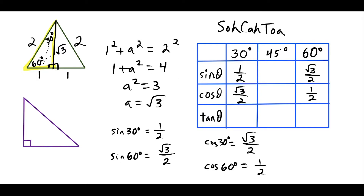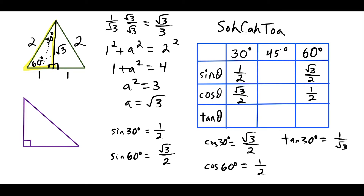For tangent, we use the ratio opposite over adjacent. Tangent of 30 is the side opposite 30, which is one, over the side adjacent, which is root 3. Rationalizing by multiplying by root 3 over root 3 gives square root 3 over 3 — this is the more common form. For tangent of 60, opposite is root 3 and adjacent is one, so tangent of 60 is just square root 3.